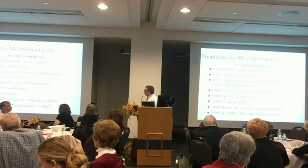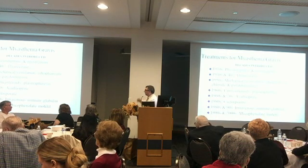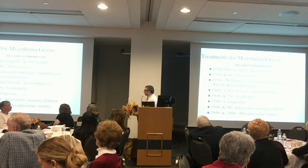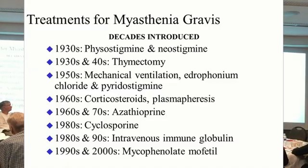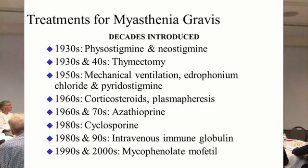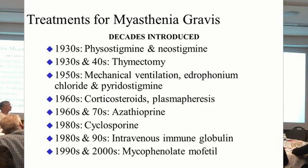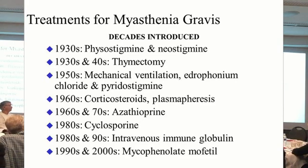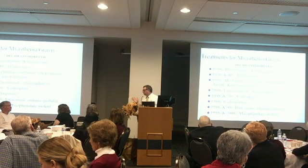Pyridostigmine was first used in the 30s. Then azathioprine, cyclosporine, mycophenolate, and IVIG were essentially borrowed from other specialties. When people started doing kidney transplants in the 60s and dealing with organ rejection, they developed azathioprine, then cyclosporine and mycophenolate, and we started using those for MG. IVIG was used for immune deficiency and we started using it for MG as well.